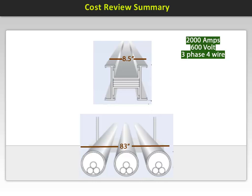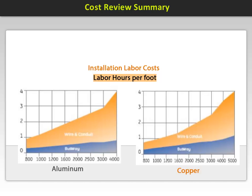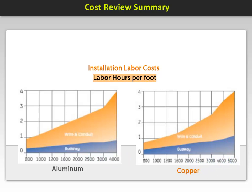Similar percent savings is achieved in all sizes. If we examine the installation cost chart for aluminum bus, we can see that labor hours per foot provide sizable lower costs. The same is true if we examine the chart for Copper Busway. As the current increases, the cost differentiation becomes significant. All Busway manufacturers provide on their website worksheets and calculators to help you with your specific application.